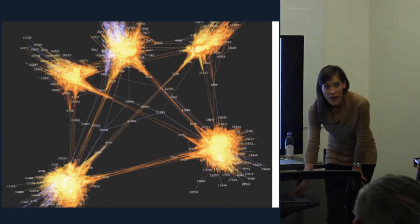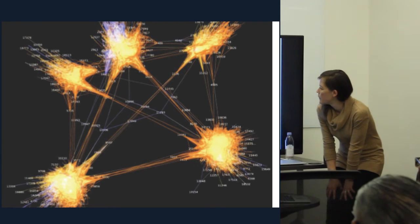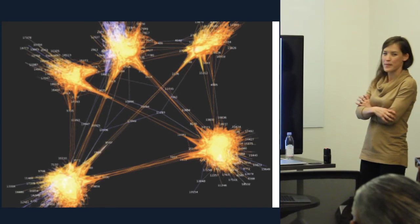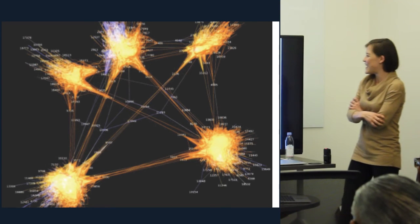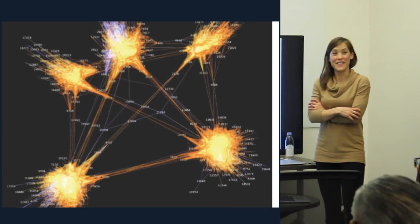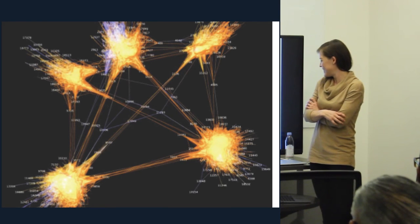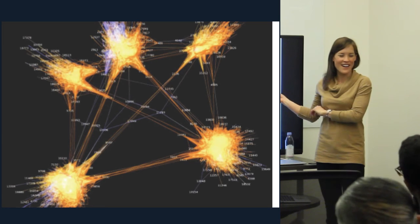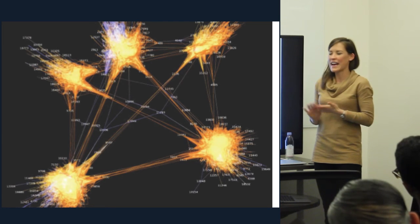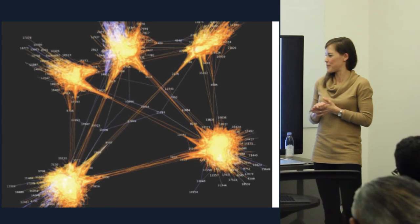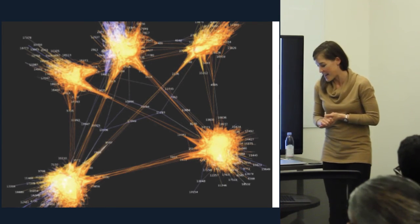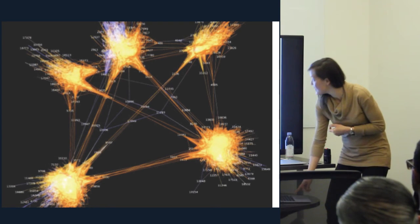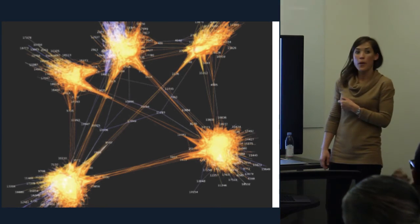Someone asked what the different colored lines in the visualization represent. Honestly, I'm not sure — it's been a while since I've done this, sorry. We did it in R and I can't remember which package we used, which is a bummer because I'd like to use it again.